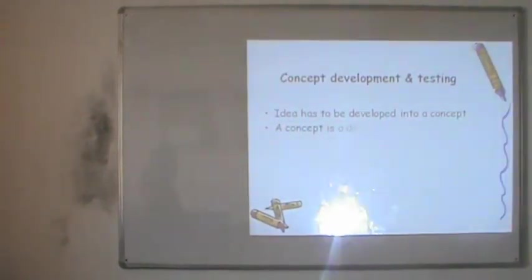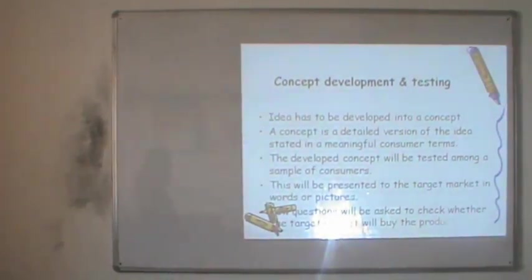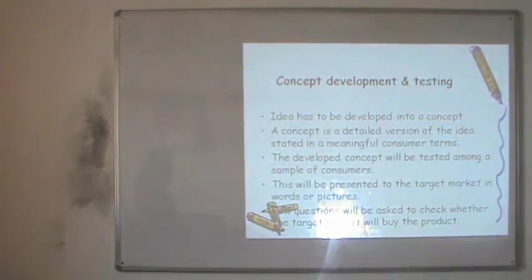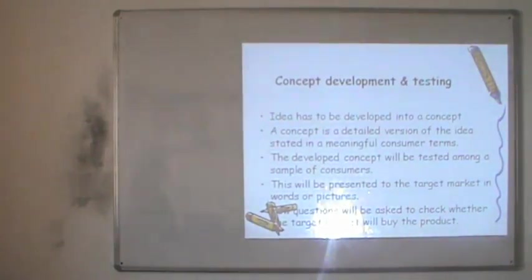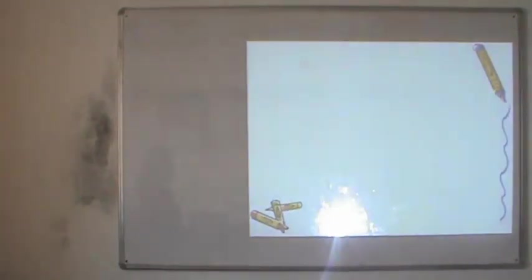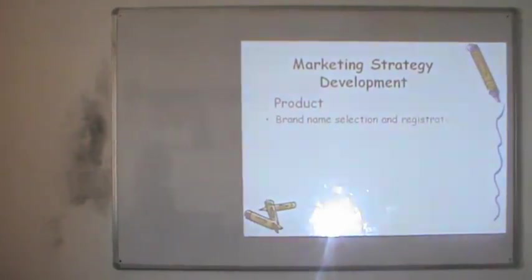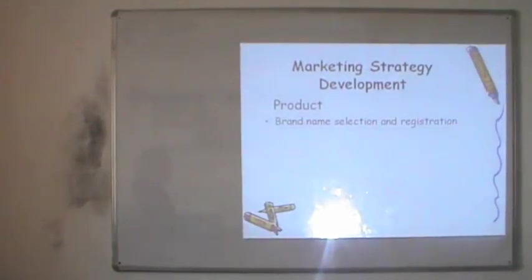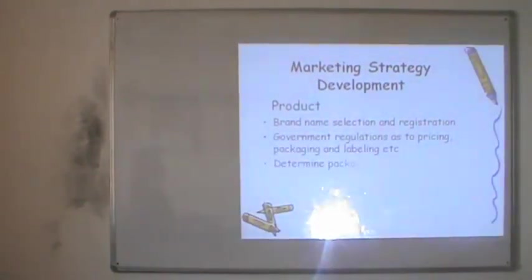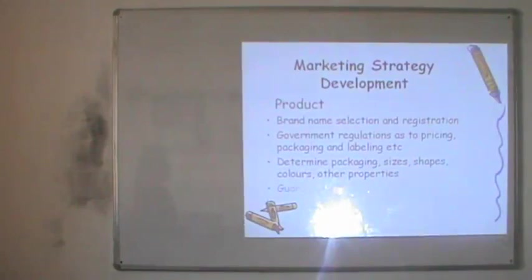In stage three, the company develops various concepts from the chosen ideas. A concept is a detailed version of the idea stated in meaningful consumer terms. The developed concept is then tested among a sample of consumers, presented in words or pictures, and questions are asked to check whether the target market will buy the product. Once this is done, the company enters the marketing strategy analysis stage, where decisions related to the four P's are taken — including the product name, state, packaging sizes, shapes, colors, and properties.